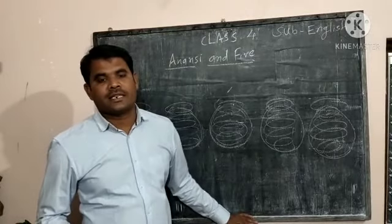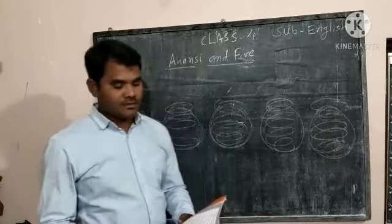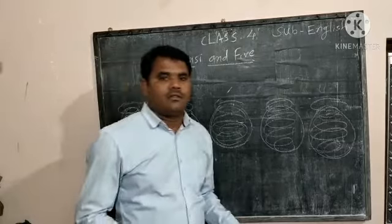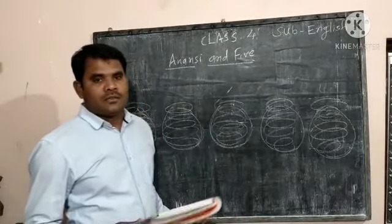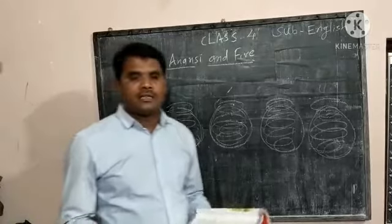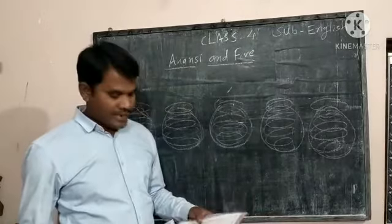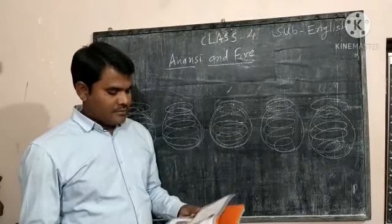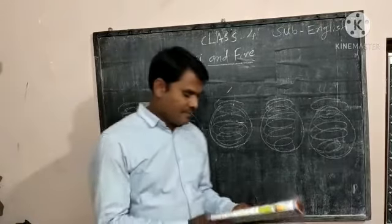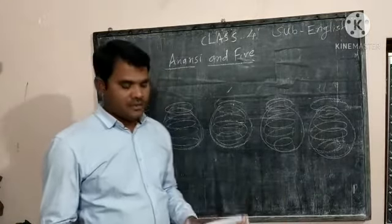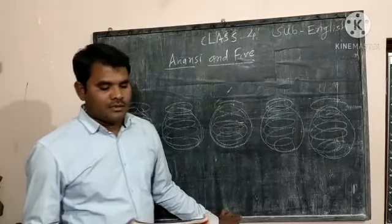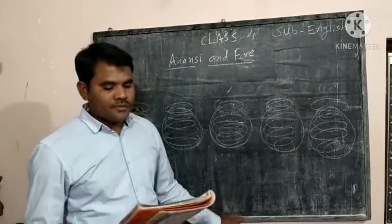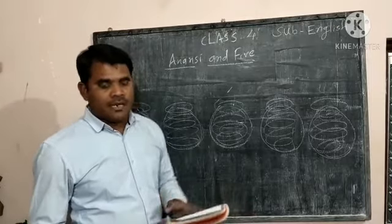This is fourth standard subject English and here we are going to see the Anansi and Eve chapter. In the last period we have seen the two animals Anansi had met on the way and he deceived that animal. Firstly Mrs. Rabbit and secondly Mr. Duck and he ate all the food. Now next part of the story.